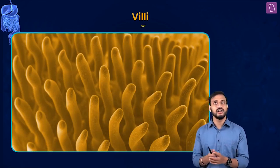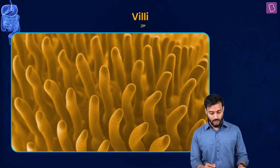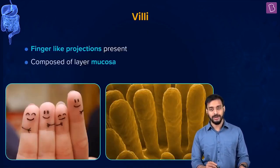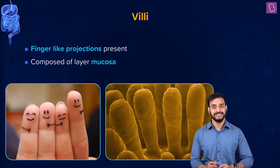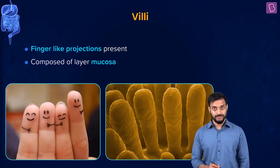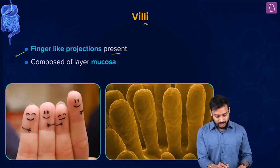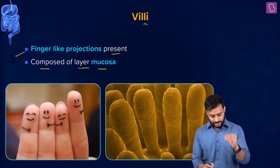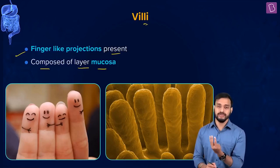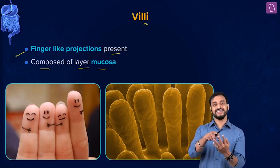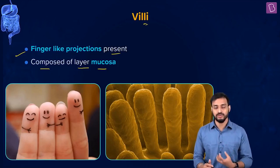The villi resemble sea anemones - like where Nemo hides in the movie Finding Nemo. These finger-like projections are composed of the mucosa layer. Their function is to increase the surface area for absorption, which is one of the main functions of the small intestine - absorption of nutrients from digested food.